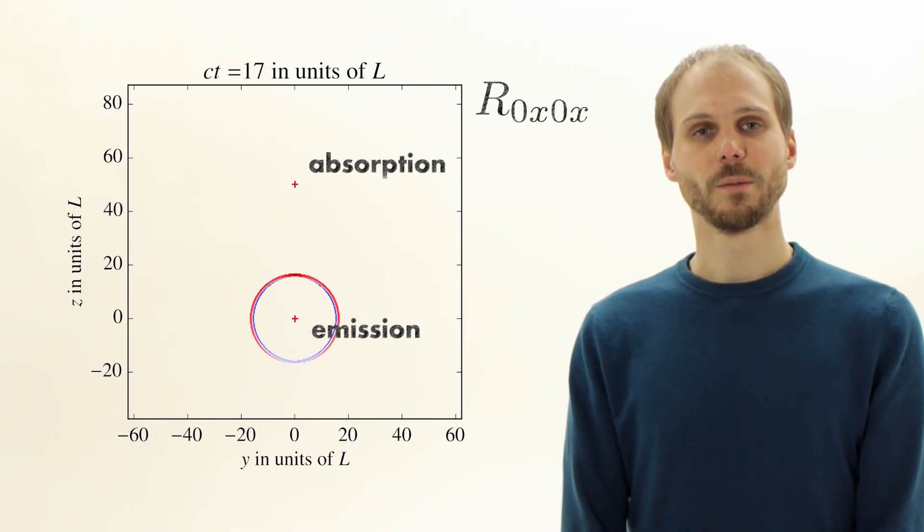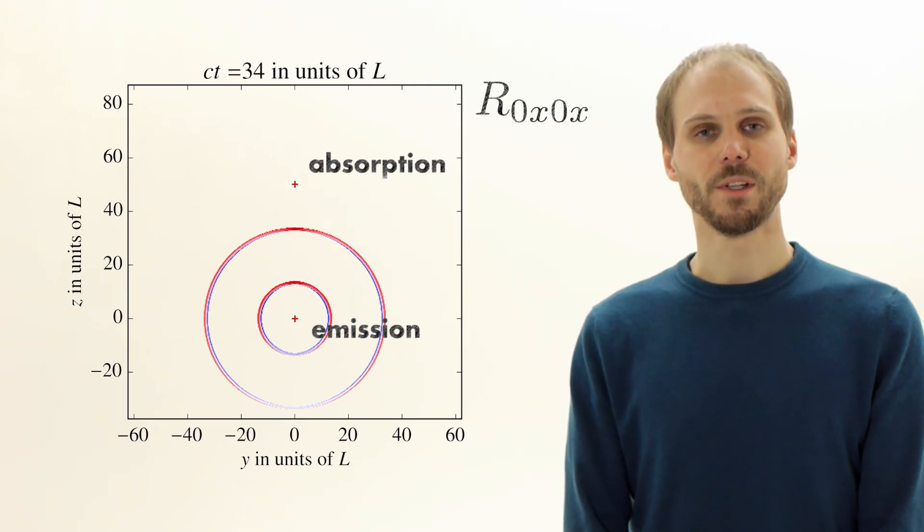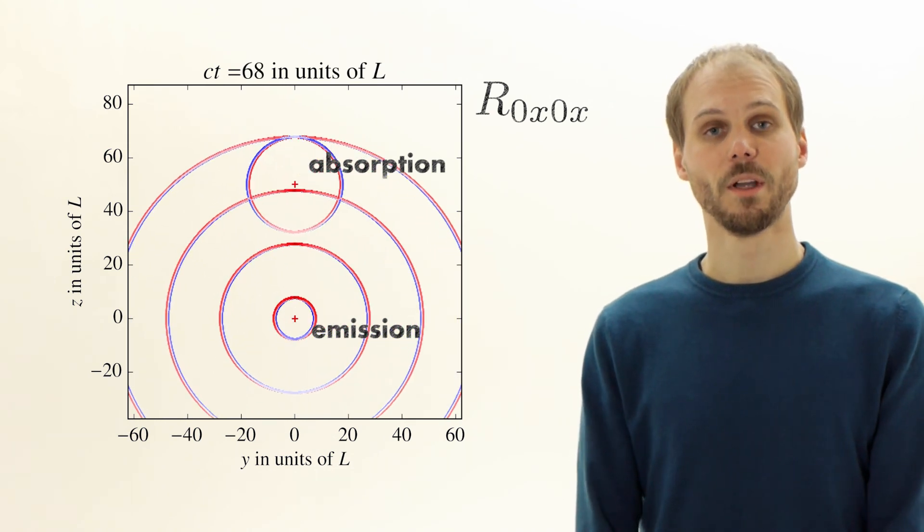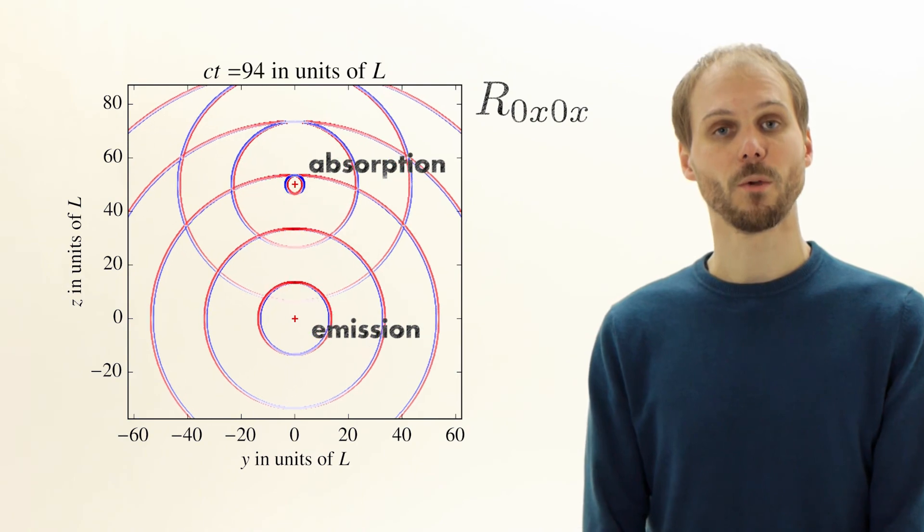A periodically pulsed laser leads to an oscillating gravitational field. In our article we compare the corresponding curvature to that expected for gravitational waves from cosmic sources.